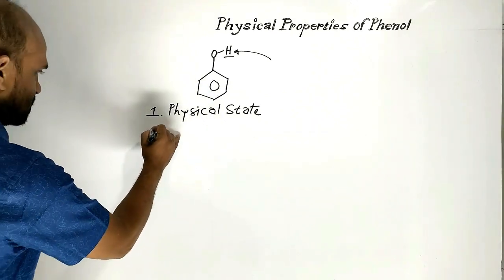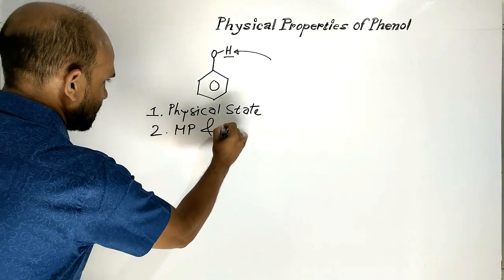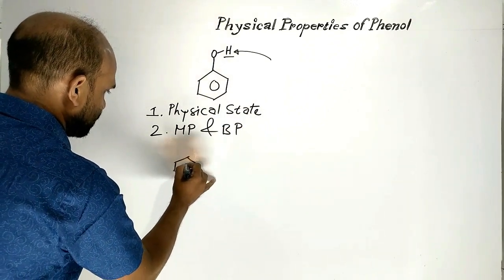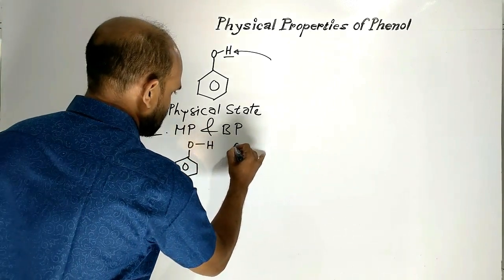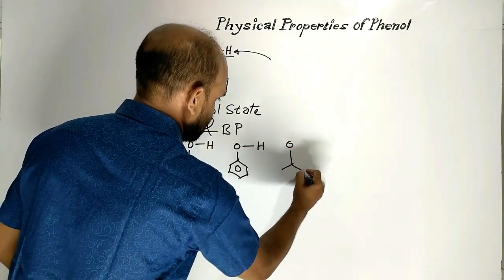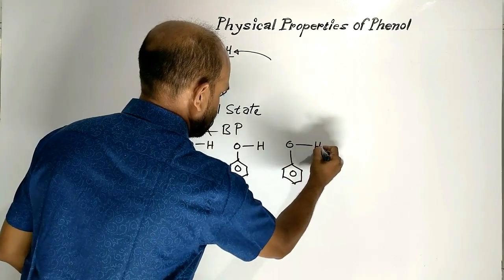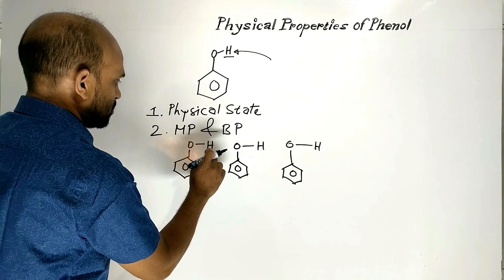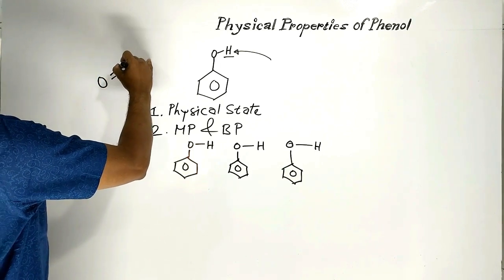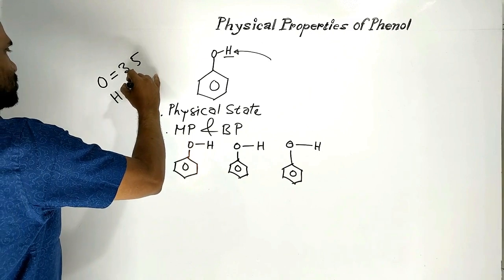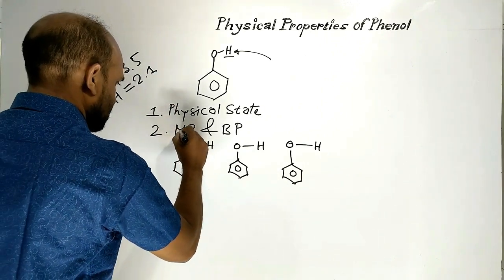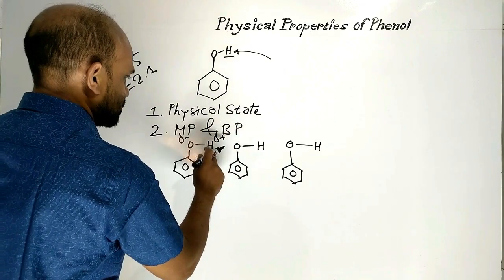Now melting point and boiling point. Phenol molecules form hydrogen bonds. The Oxygen-Hydrogen bond gets polar because the electronegativity of Oxygen is 3.5 and for Hydrogen it is 2.1. That is why Oxygen becomes negative in charge and Hydrogen becomes positive in charge.